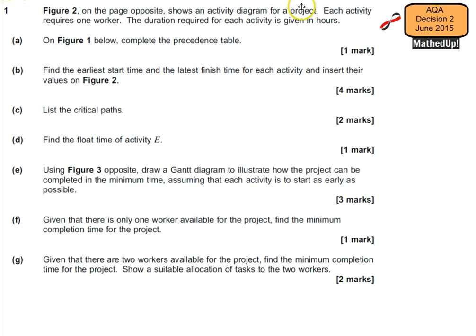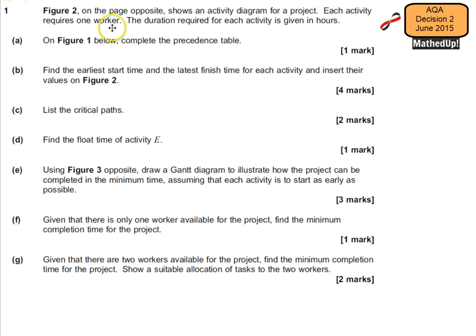This is question number one from the June 2015 AQA Decision 2 exam paper. On this page we're given an activity diagram for a project, and each activity requires one worker. We're given the duration required for each activity in hours.